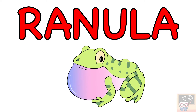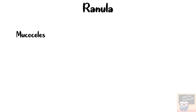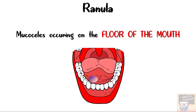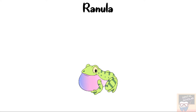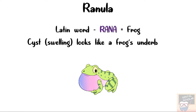In this video I am going to tell you about ranula. Ranula is a term used for mucoceles occurring on the floor of the mouth. The name ranula is derived from the Latin word 'rana' which means frog, and as the cyst or swelling looks like a frog's translucent underbelly, it is called ranula.